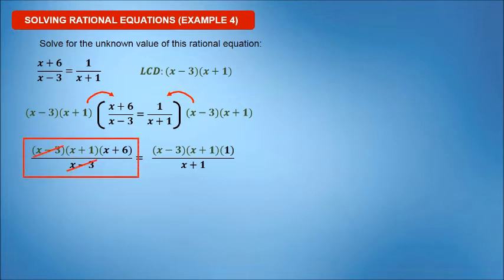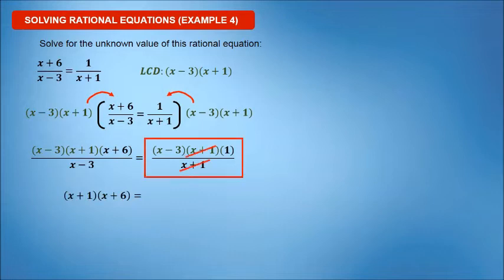Denominators will be eliminated. On the left expression, x minus 3 will be divided, leaving x plus 1, times x plus 6. On the right expression, x plus 1 will be divided, leaving x minus 3, times 1.